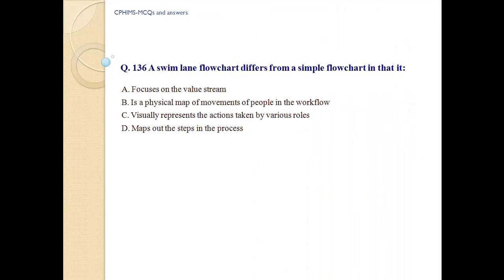Question number 136. A swim-lane flowchart differs from a simple flowchart in that it: A) focuses on the value stream; B) is a physical map of movements of people in the workflow; C) visually represents the actions taken by various roles; D) maps out the steps in the process. Answer C. Visually represents the actions taken by various roles.